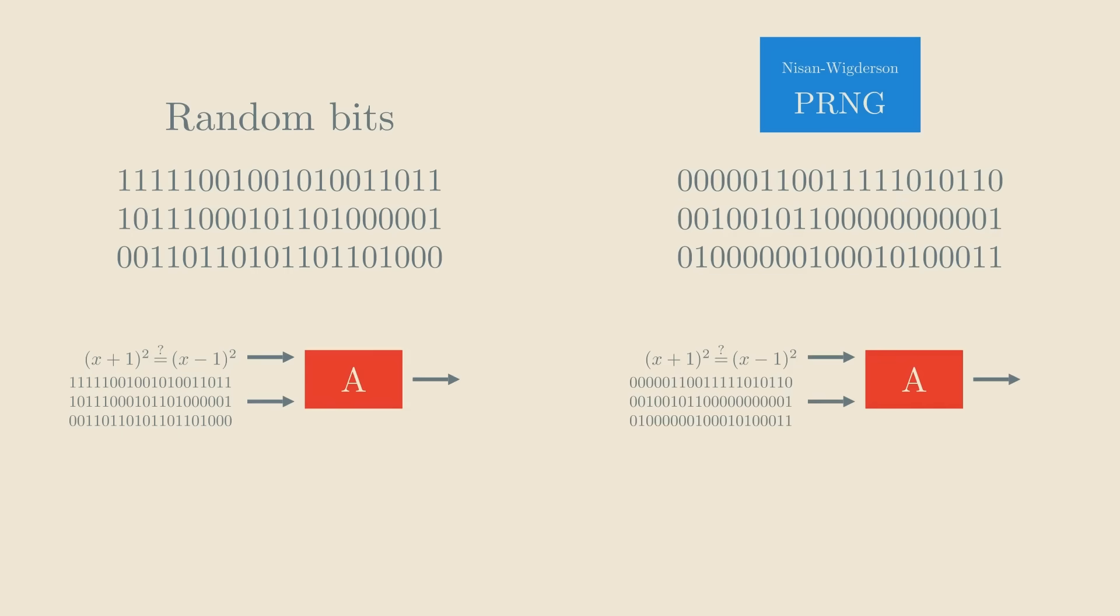And then we observe that if the algorithm behaves sufficiently differently in the two scenarios, we get a fast statistical test able to detect bits coming from the Nisan-Wigderson generator. But that's not possible.